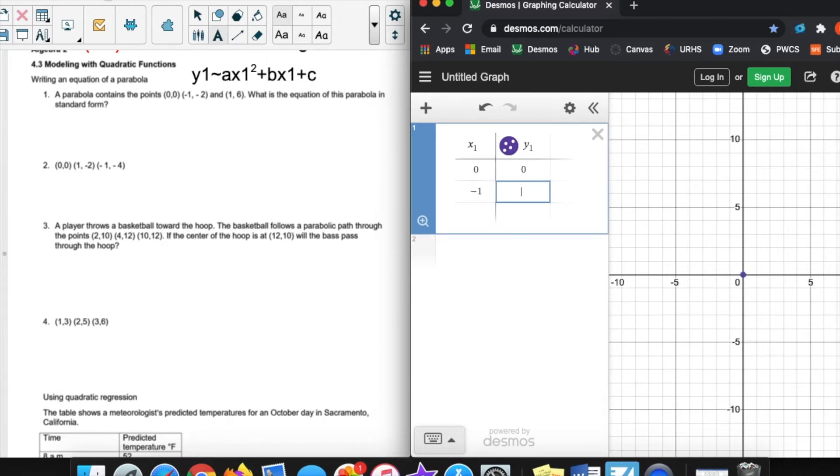Second point, (-1,-2). Second point shows up, and then the third point (1,6), the third point shows up up there. So we're given these three points. It's definitely not a full curve, but we can kind of see that this would be maybe like the right side of a curve. We can kind of see it has that curvature to it.